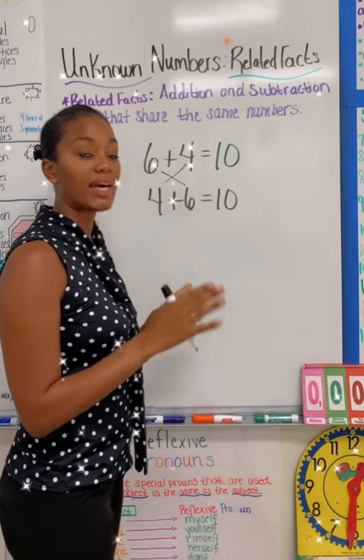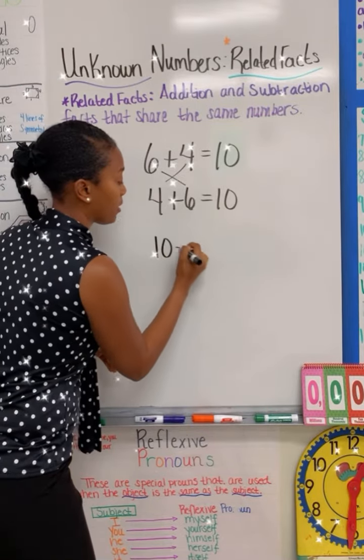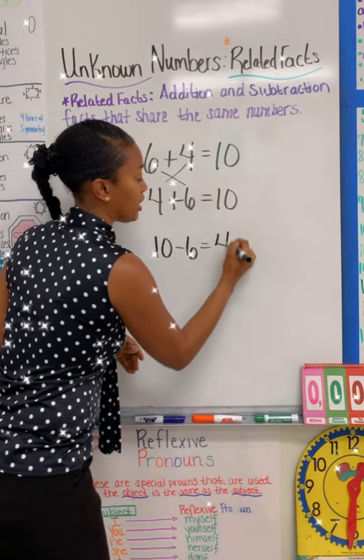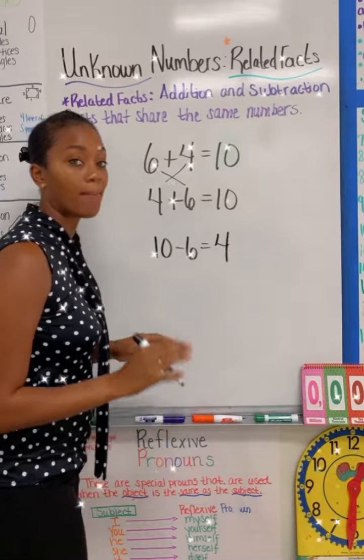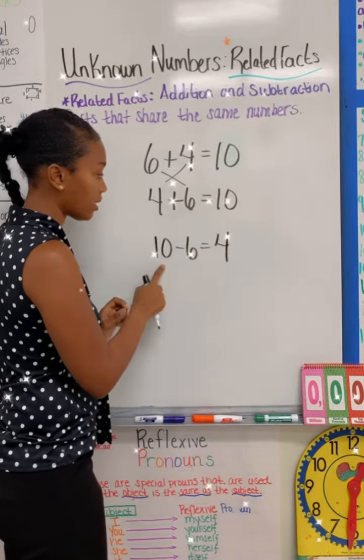Now let's look at the related fact in subtraction. That would be 10 minus six equals four. Notice that my numbers are still the same. The 10 is here, the six is here,